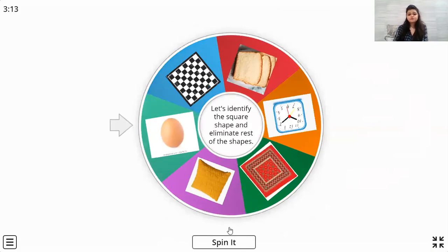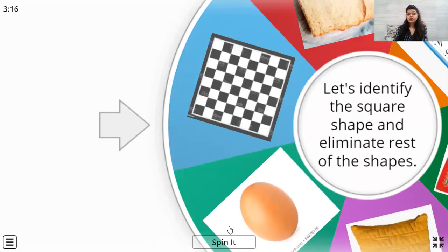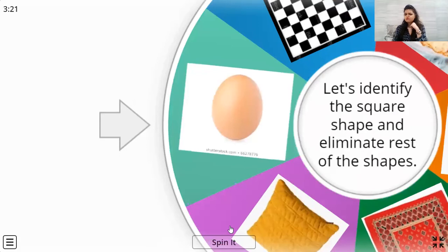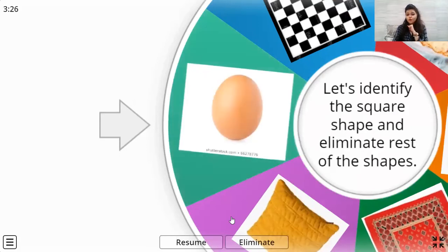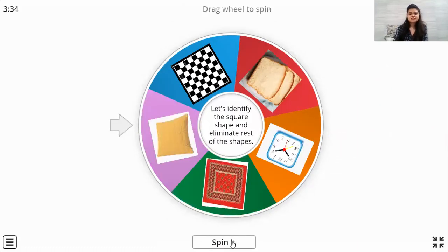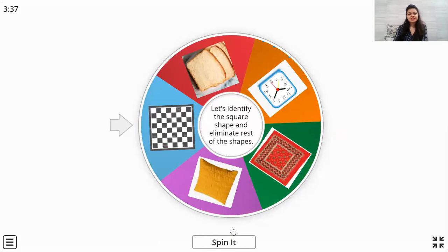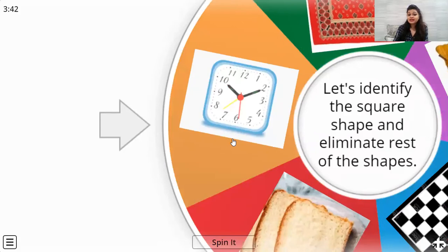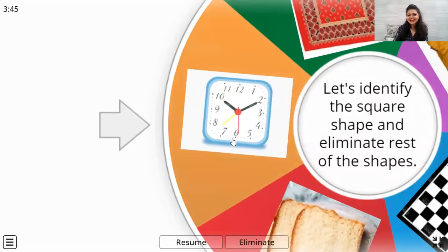Let's spin it again. What shape is it? There are no sides in the shape. So it can be a square shape? No, it can't be a square shape. But it's an oval shape, so we are going to eliminate it. We want only square shapes. Spin again. Okay, let's check. Which shape is it? That's again a square shape. We are going to resume it because all the four sides are same.